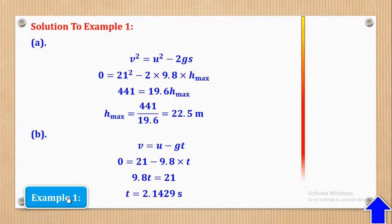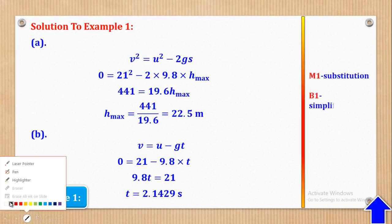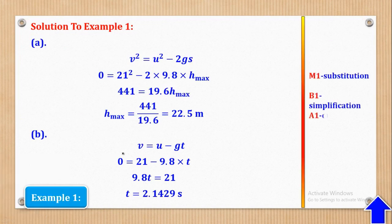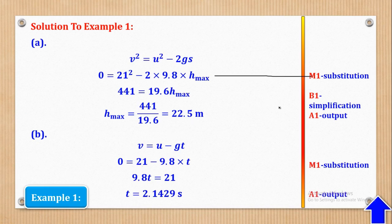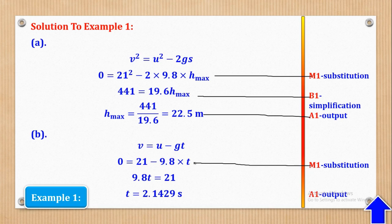M1 is awarded for substitution and B1 is for simplifying, and A1 is for the output. For part B, M1 is for the substitution and A1 is for the output.